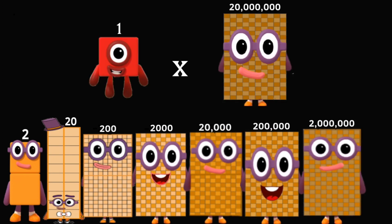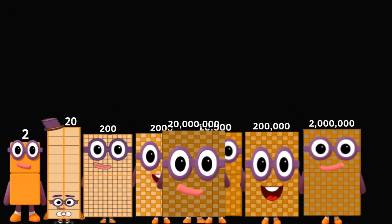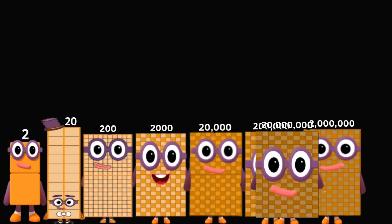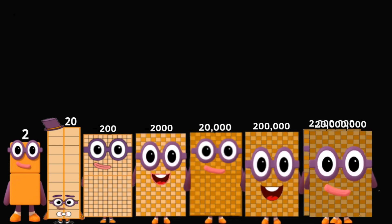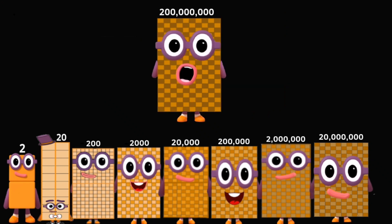1 times 20,000,000 equals 20,000,000. 1 times 200,000,000 equals 200,000,000.